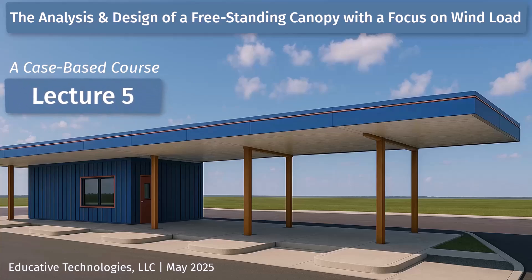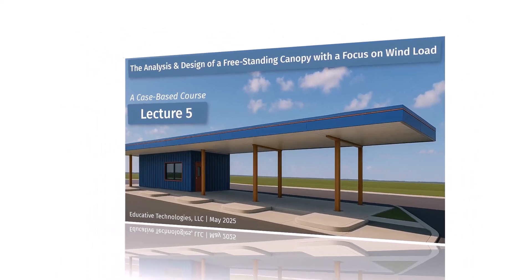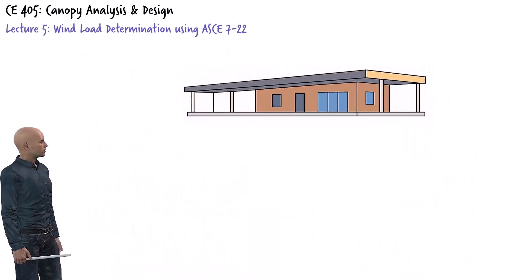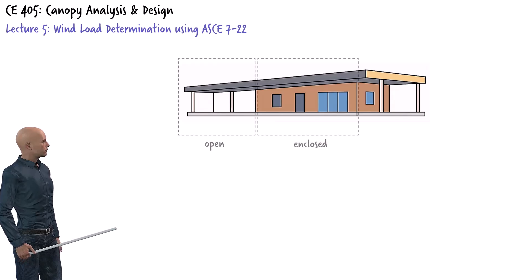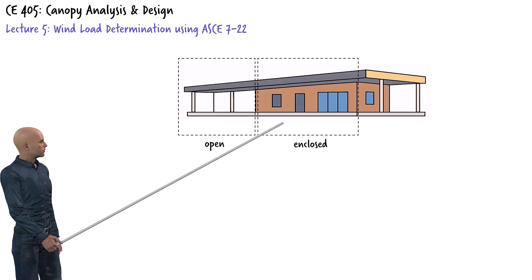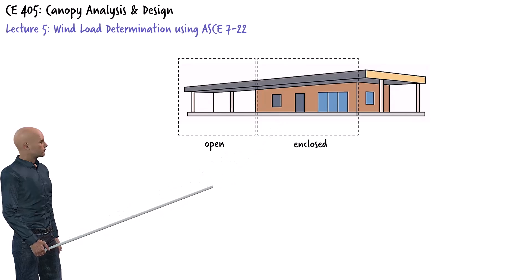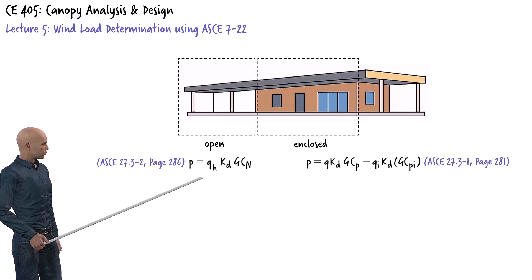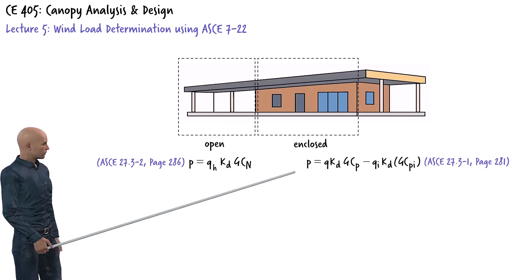This is lecture 5 of our bus terminal wind load analysis. In the previous lecture we discussed the special nature of our structure. Part of the terminal is open and part of it is enclosed with office spaces. To capture all possible wind effects we're using two different ASCE equations, one for the open portion of the structure and one for the enclosed areas.